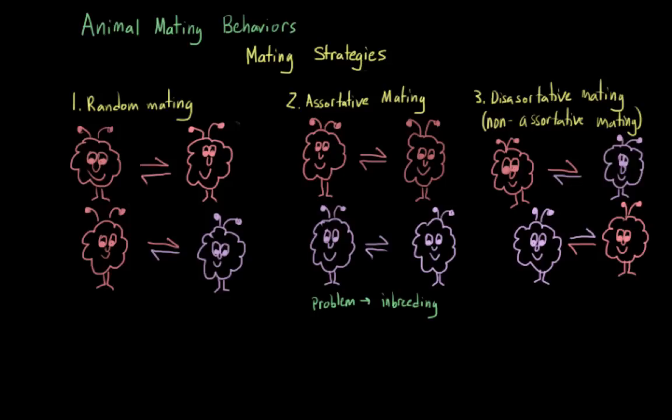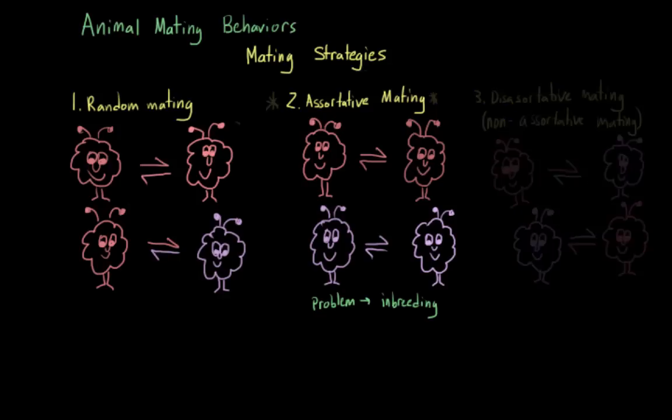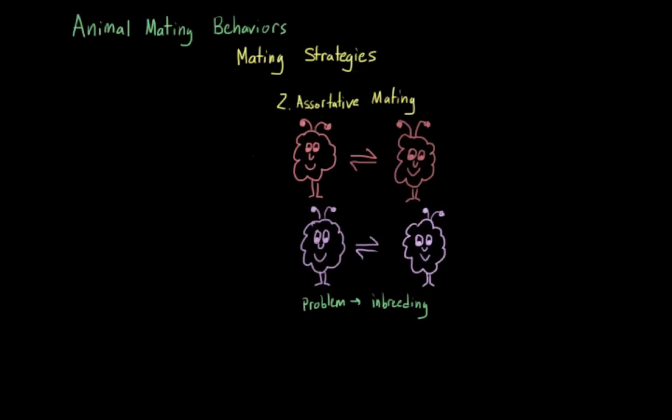And you might be wondering, which of these strategies is better? And that's actually kind of an odd question. But in general, I would say that scientists would point to assortative mating because despite the dangers of inbreeding, it can generally help to increase the inclusive fitness of an organism.